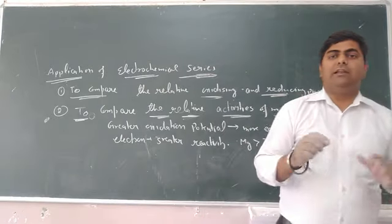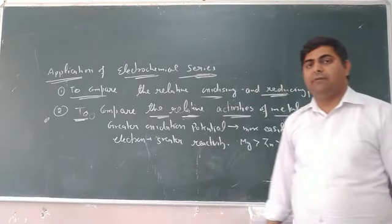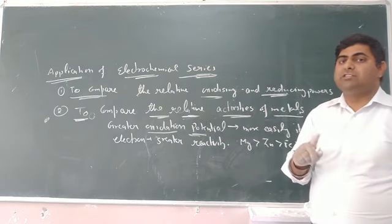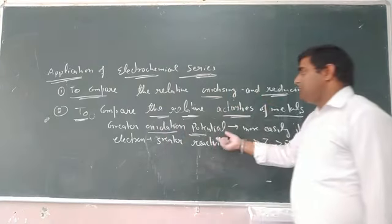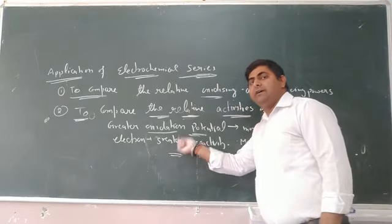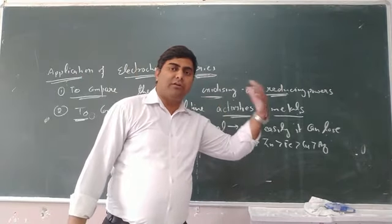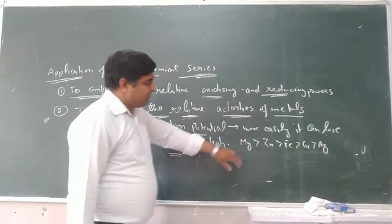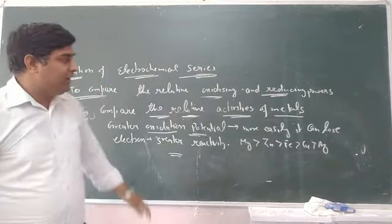The second application is to compare the relative activities of metals. The electrochemical series is used to compare the reactivity of various metals. Those metals which have greater oxidation potential — remember oxidation potential equals negative of reduction potential — can lose electrons more easily, hence they are more reactive. For example, magnesium is more reactive than zinc, than iron, than copper, than silver.